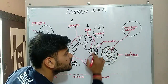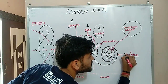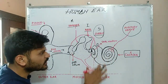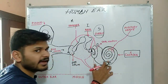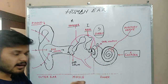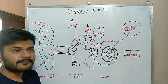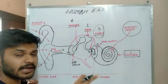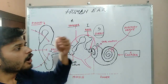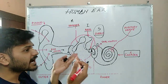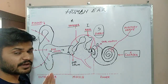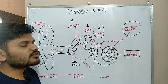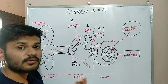The oval window transfers these vibrations into the inner ear, which consists of a portion called the cochlea. This is the main portion of the human ear. The cochlea has the shape of a snail and consists of long tubes arranged in a circular manner, filled with liquid and containing many nerve cells that convert sound vibrations into electrical impulses.